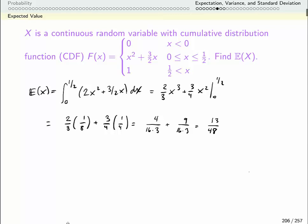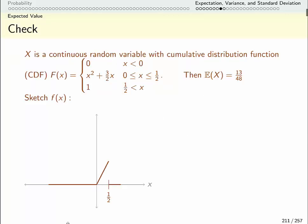That is our expected value of this continuous random variable. So now that we have this, let's just do a quick check to make sure that it's actually reasonable. Let's go back to thinking about our probability density function. Here's that probability density function we found. It's 0 when x is negative and 0 when x is bigger than 1 half, and in between it's a line pointing up.